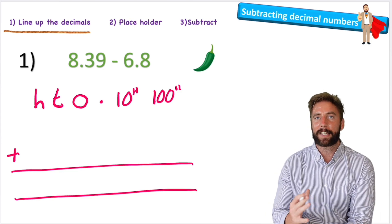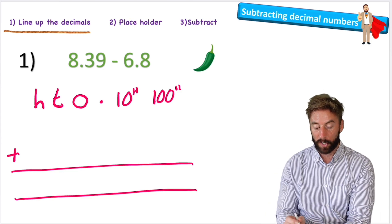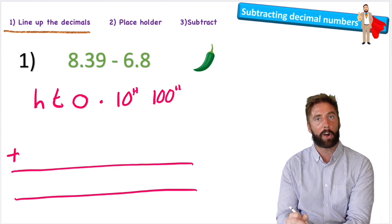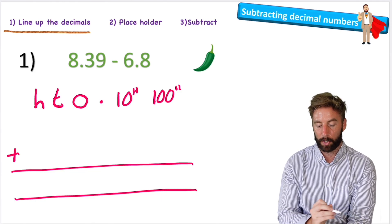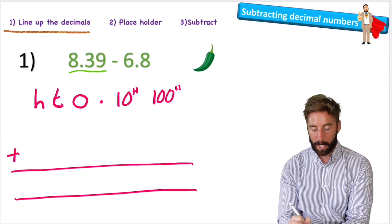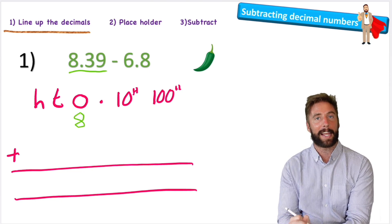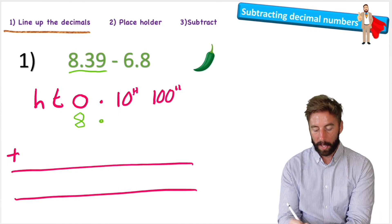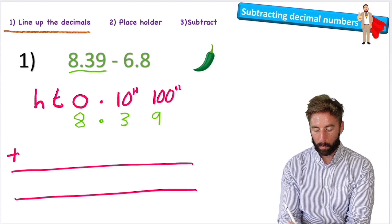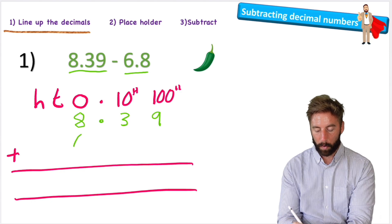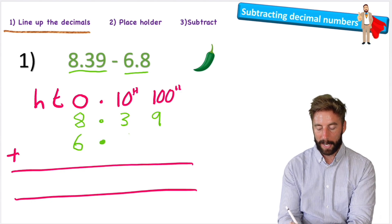So this is how I like to set up my subtraction questions. I have the titles above where the numbers are going to sit. I have a nice clear column for my decimal and I'm ready now to put my numbers in place. So 8.39 is made up of eight ones, so I'll put that eight in the ones column, and I'm going to put my decimal nice and clearly in the decimal column. Three tenths and nine one-hundredths. Then my second number is 6.8, so I have six ones, decimal point, and eight tenths.